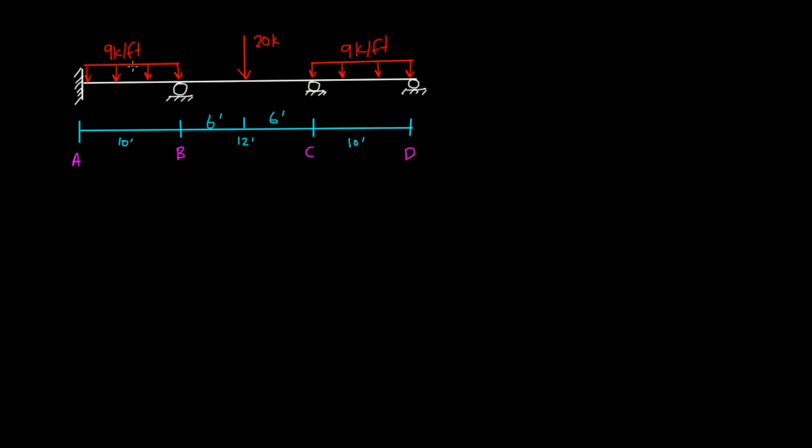Spans A, B and C, D have a 9 kip per foot uniformly distributed load. And there's a point load P, or 20 kips, here on span B, C at 6 feet from either B or C.